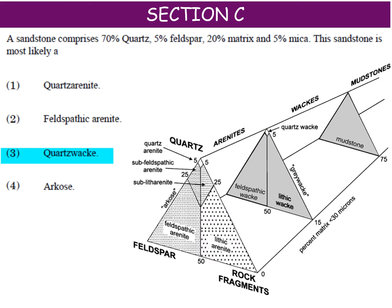The next question: a sandstone comprises 70% quartz, 5% feldspar, 20% matrix, and 5% mica. This sandstone is most likely which type? To answer this you have to remember the arenite classification diagram.